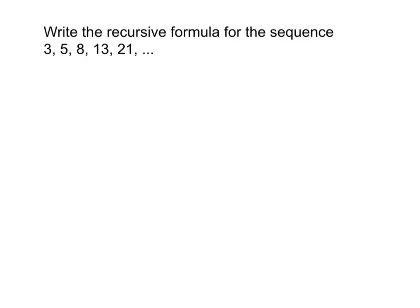One more slightly more complicated example for recursive formula is one that's not arithmetic or geometric at all. If you take a look, to get the next term, we actually add the two previous terms. 3 plus 5 equals 8. 5 plus 8 gives 13. And 8 plus 13 equals 21.